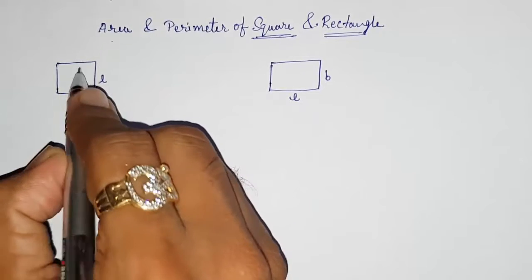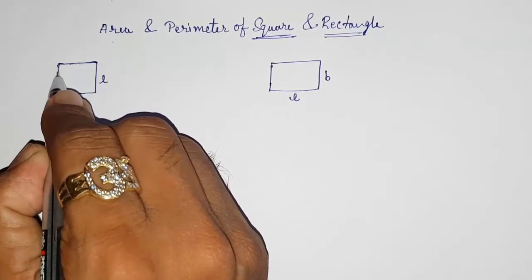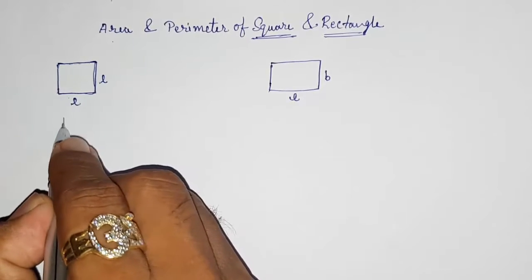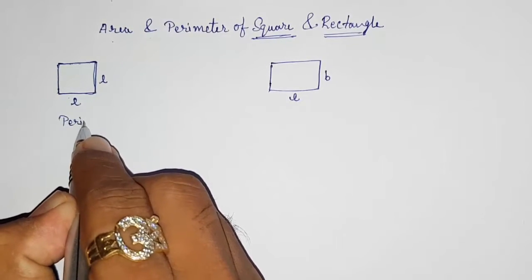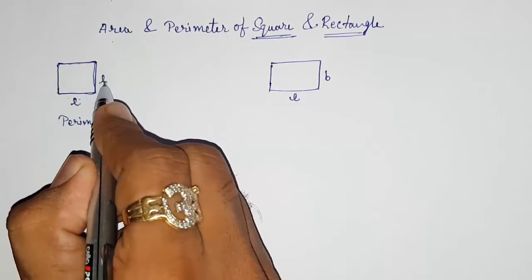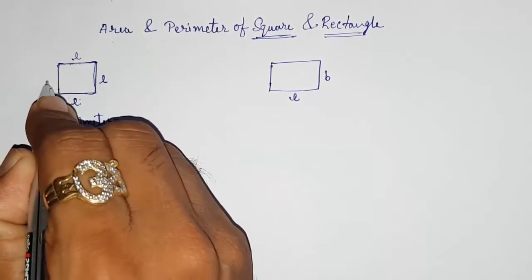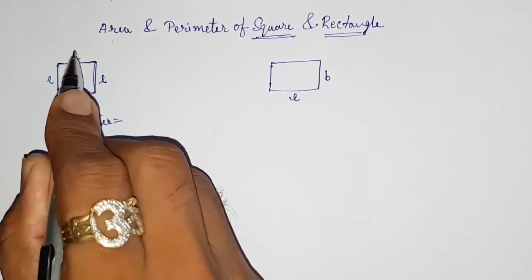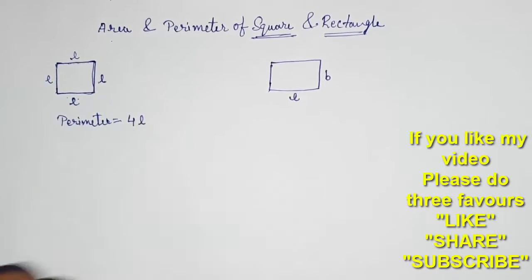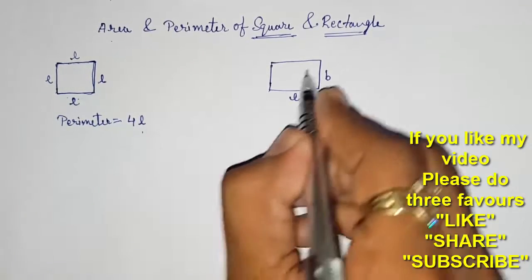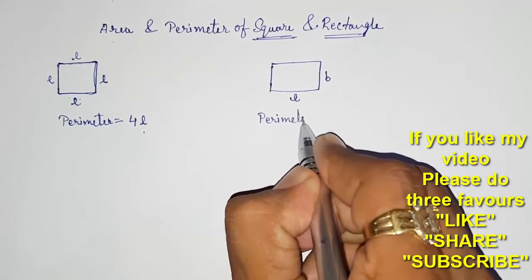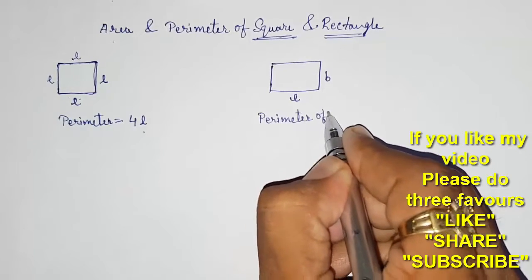Now if I want to find the area and perimeter — perimeter means the length of the outer boundary. The perimeter of a square: this side is length, this also length, this also length, and this also length. So length plus length plus length plus length equals four times length. Directly you can write four into length. But for the perimeter of a rectangle, what do you have to do?